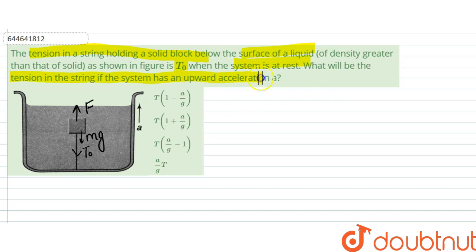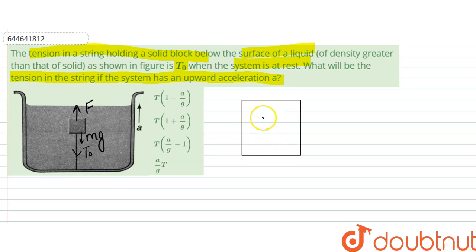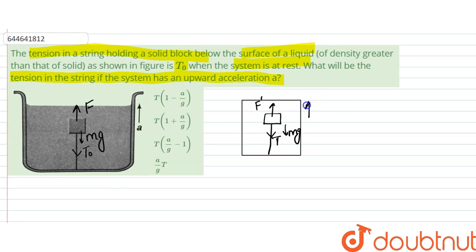What will be the tension in the string if the system has an upward acceleration A? So let us draw this diagram again. Here is the block, so there would be a T0 here, there would be mg here, and there would be an upthrust force that is F dash. The tension would change according to that due to the acceleration, since it is accelerating in the upward direction.